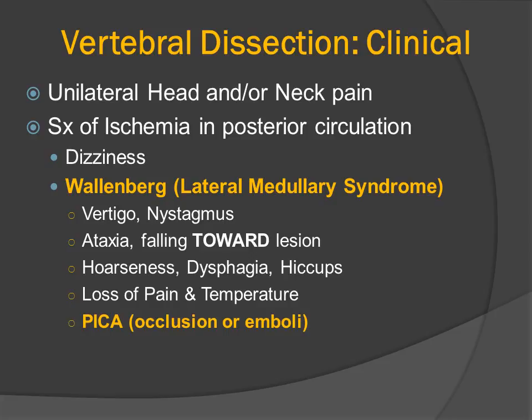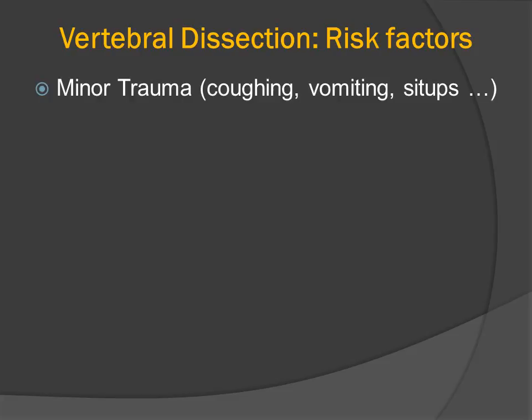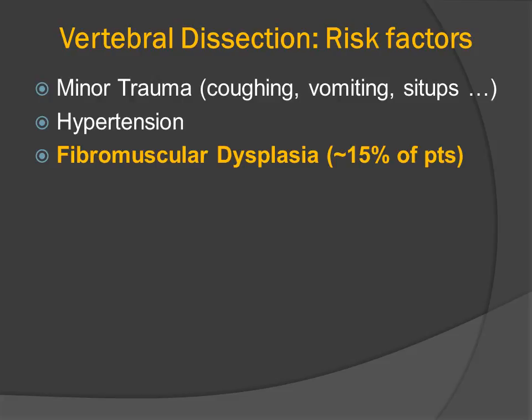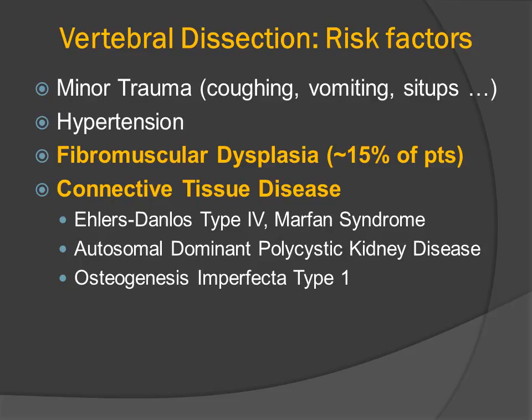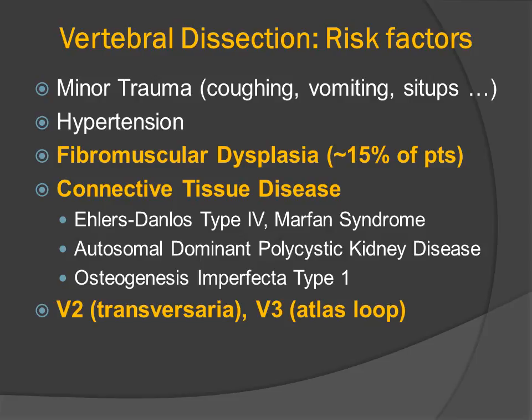These are all related to ischemia or occlusion of the posterior inferior cerebellar artery. Risk factors for vertebral dissection include minor trauma, hypertension, fibromuscular dysplasia — identified in up to 15% of patients — and various forms of connective tissue disease, including Ehlers-Danlos, Marfan syndrome, autosomal dominant polycystic kidney disease, and osteogenesis imperfecta. The most common sites of vertebral dissection are the transversarial or foraminal portion (V2 section) and the atlas loop (V3 section).